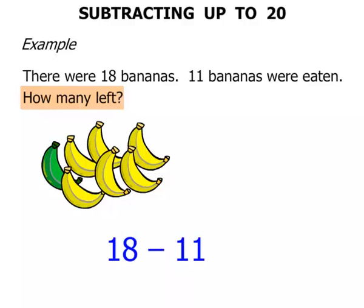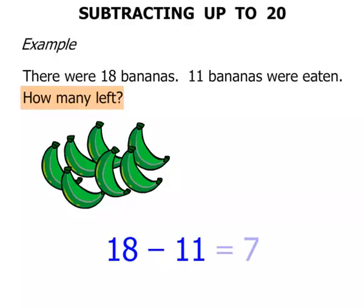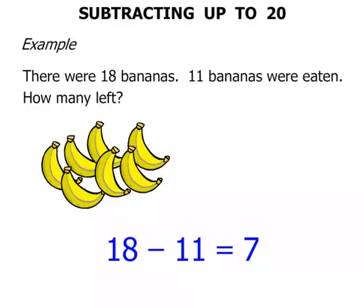How many left? 1, 2, 3, 4, 5, 6, 7. So the answer equals 7. But there's 7 green bananas. I think let's change them back to yellow. Much nicer to eat.